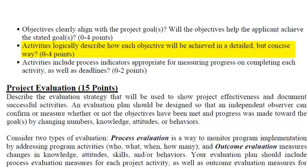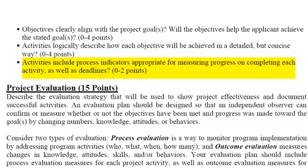Do our activities include process indicators appropriate for measuring progress on completing each activity, as well as deadlines? Yes — for example, with the fact that we're going to hold that Teen Driving Alliance meeting, we said that we are going to do that every month, so at the end when we're trying to do our process measures, we'll know that we did or did not have a meeting every month. Great. Well, I think we're off to a good start — maybe just add a few more activities and then we'll be done with that section. The next section is project evaluation, and it's very important for your project evaluation to tie very closely to your goals and objectives and activities. So we'll probably be revisiting these during the next module, which is project evaluation. Stay tuned.